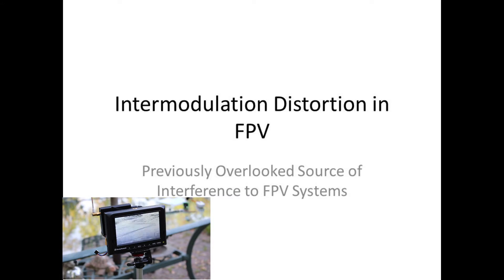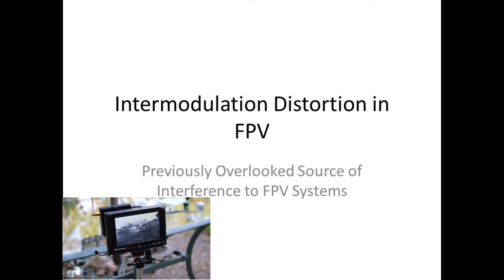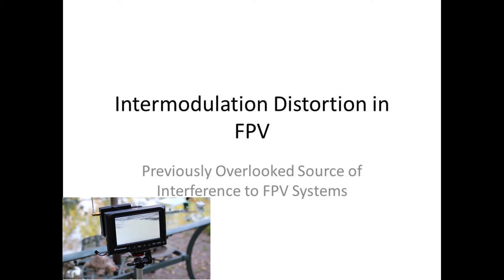This video is a discussion of what may be a previously overlooked source of interference to FPV systems — first person view systems used for radio control models — and in particular interference sources that occur during FPV racing, where you have a number of pilots and systems operating at the same time. Previously, we have been looking carefully to avoid adjacent channel interference, but what we're going to discuss today is not related to adjacent channel interference. Adjacent channel interference occurs when we pick channels that are too close to one another and the receivers are not able to distinguish between those frequencies, getting bleed over from an adjacent channel.